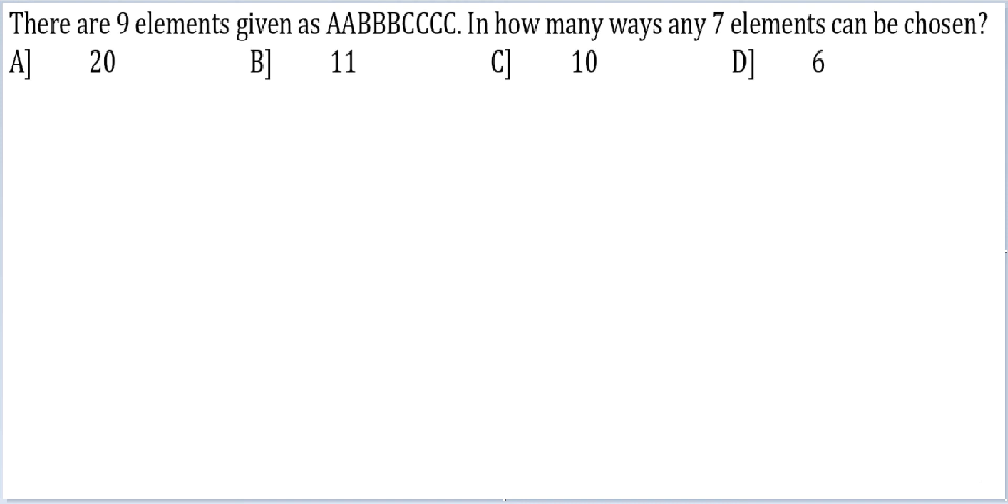So if you have to choose 7 elements out of 9 here, it would not make sense to select 7 numbers out of 9. Instead, it would make more sense if you rejected 2 elements out of 9. Now in how many ways can you reject 2 elements?